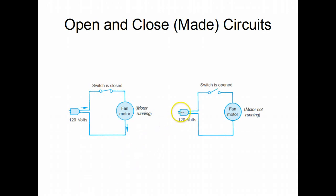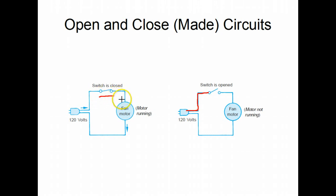An open circuit is just as it sounds — the switch is open. Now we don't have a complete path for the current to flow. So in this circuit, if this was a fan motor, this fan motor will not be turning. Whereas in this circuit that is made and the switch is closed, the fan motor will be operating because we have that complete circuit.